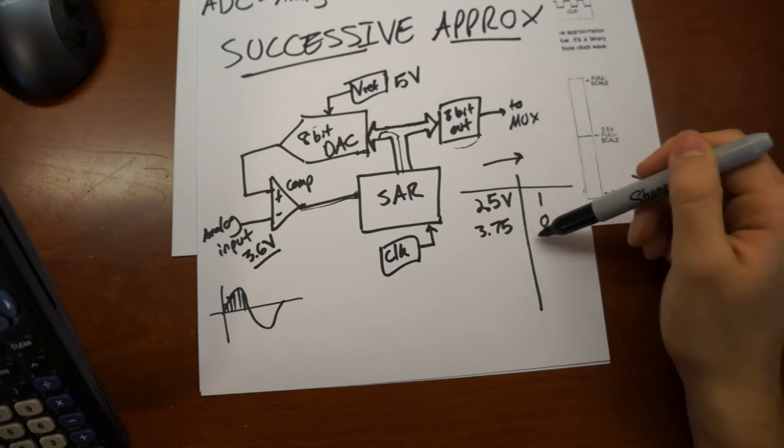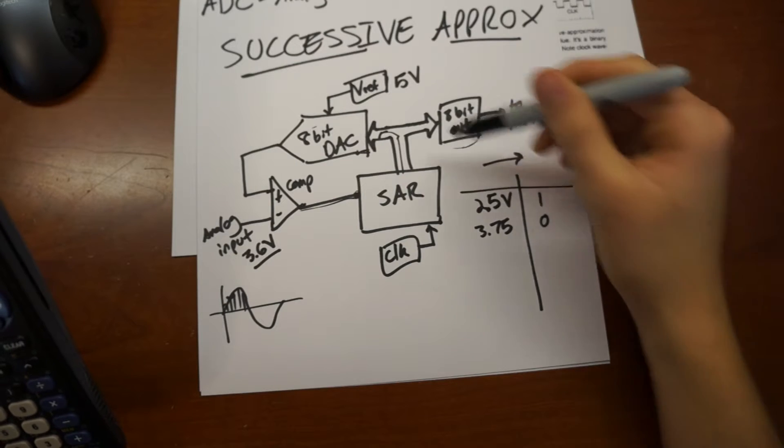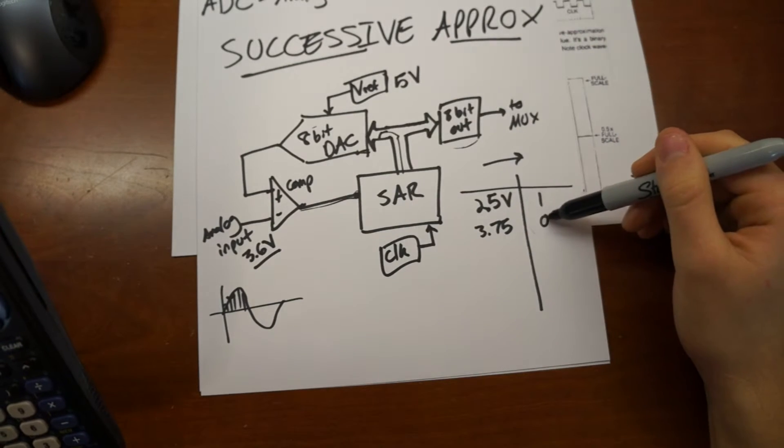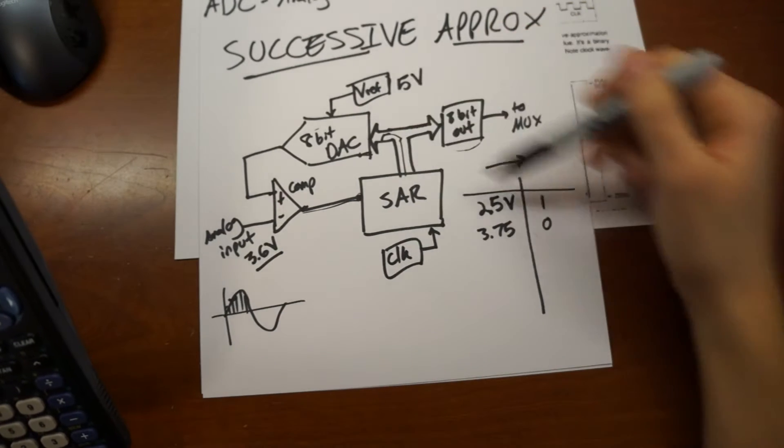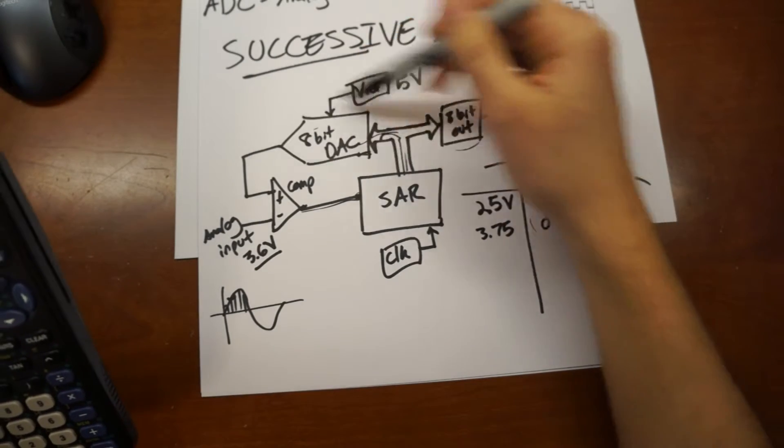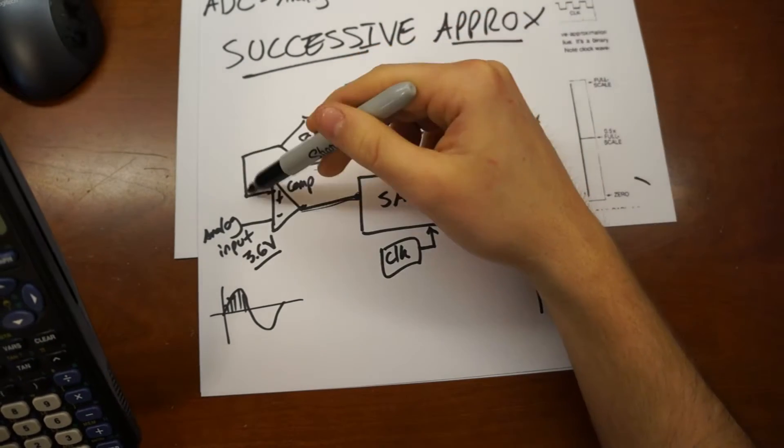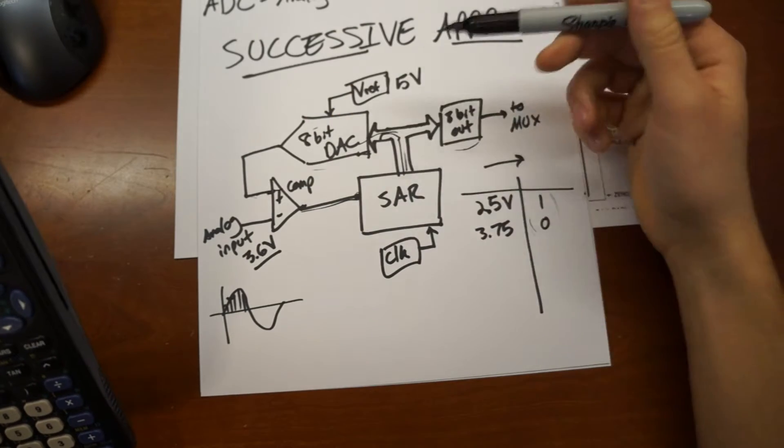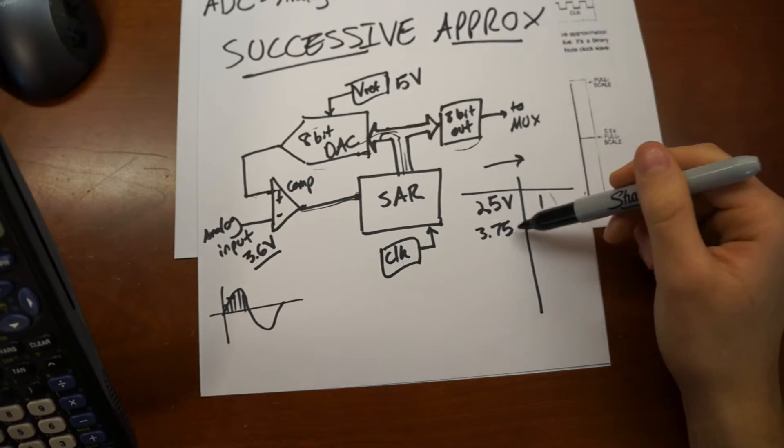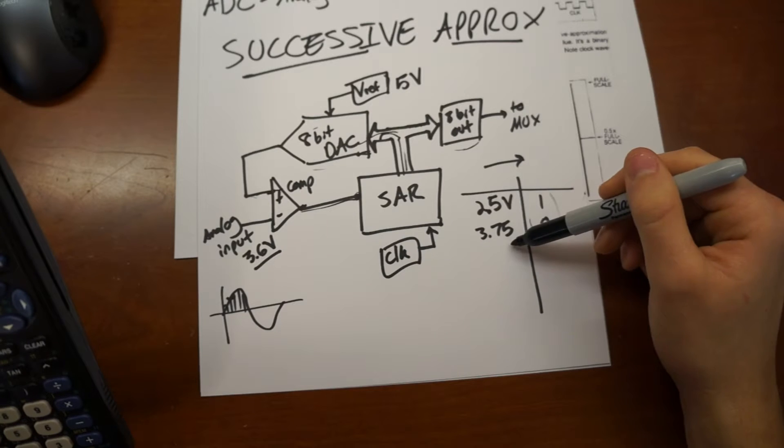The 3.75 is now, that reference voltage yielded a zero. And so, again, these bits are passed back into the 8-bit DAC, and then it then sends its next guess, which would be 3.75 minus.